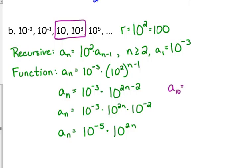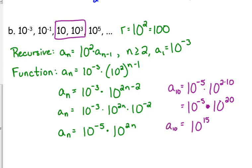We're finding the 10th term. It's a whole lot easier to plug it into that last one. 10 to the negative 5. And guess what? I don't even have to touch my calculator because 2 times 10 is 20. We have the same base, so we can combine those. So that's 10 to the 15th. And I would leave my answer that way because that's a really, really big number.